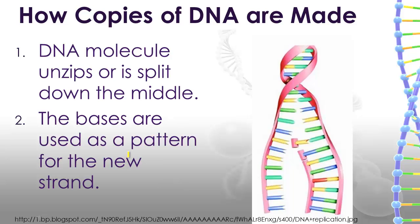What are the steps in making copies of the DNA molecule now that we understand complementary base pairs? First of all, this complicated double helix has to be unwound and unzipped. That means a special enzyme comes in and splits the molecule apart right at the bases. One half of the DNA string is on one side and the other half is on the other side, and then these bases are used as a pattern for the new strand of DNA.